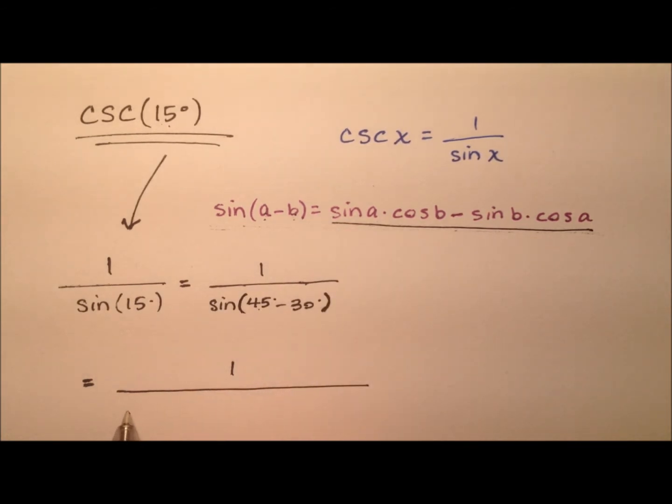When we do that, we'll end up with sine of 45 degrees times cosine of 30 degrees minus sine of 30 degrees times cosine of 45 degrees.